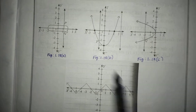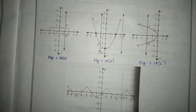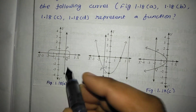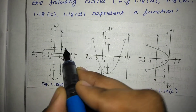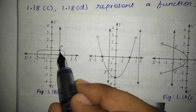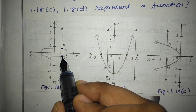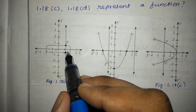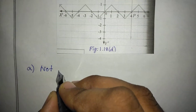First, I will draw a vertical line. This is a vertical line. We have points P and Q — we have two points. So it is not a function. A is not a function.